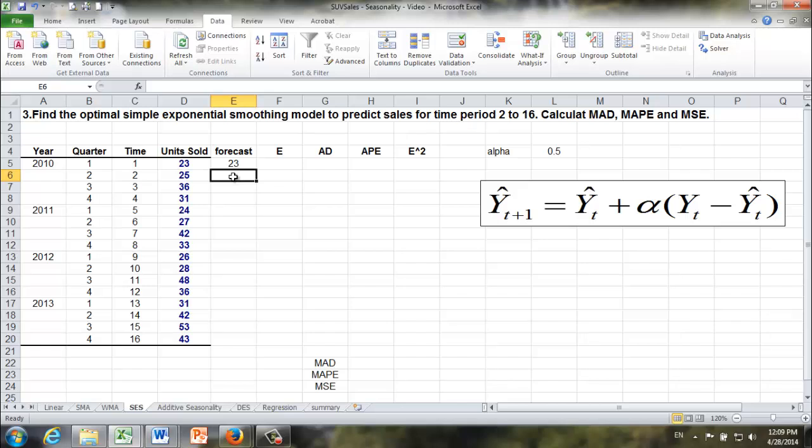Now let's turn our attention to time period 2, so we are looking for y_2 hat. In that case, t plus 1 equals 2, so t will be equal to 1. So y_2 hat will be equal to y_1 hat right here plus alpha, once again let's use absolute cell reference times the difference between y_1 and y_1 hat, okay?